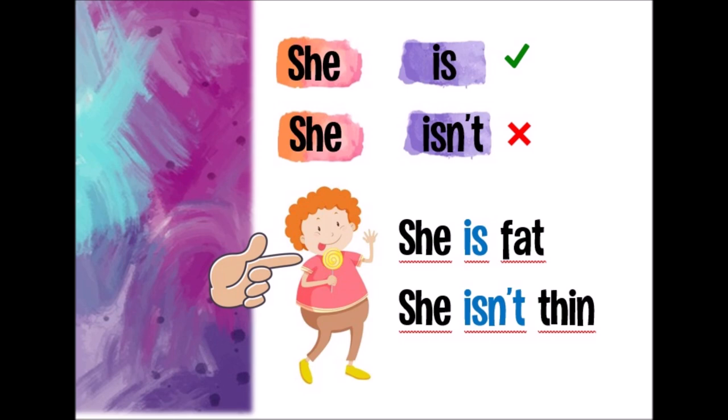If we talk about a girl, about your mommy, about a girlfriend, we say she is or she isn't. For example, she is fat. She is fat. She isn't thin. She isn't thin.